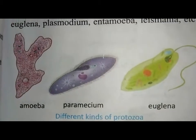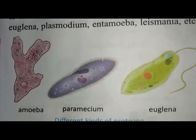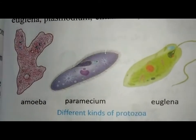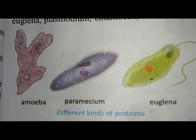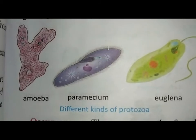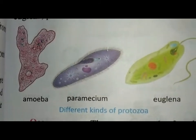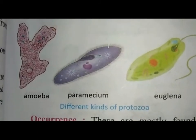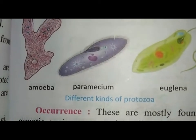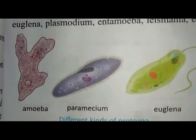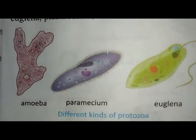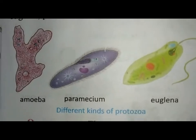Next is protozoa. Protozoa are considered to be the most primitive living organisms. Protozoa are found in fresh water, sea, and in moist habitats such as damp soil. They can be found in ponds, pools, on animals, and on plants. They are called heterotrophic and mostly aquatic organisms. Examples of protozoa are amoeba, paramecium, and euglena.